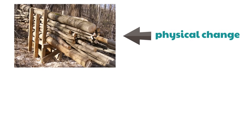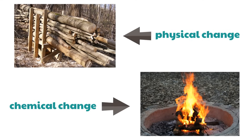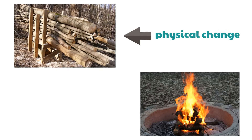Now let's say you take some of those logs and make a fire, and the logs are burned in the fire. Is the burning a physical or a chemical change? It's a chemical change, because it's changing the type of matter. The wood turns black and can turn into ashes — it changes the wood itself. It's a chemical change.